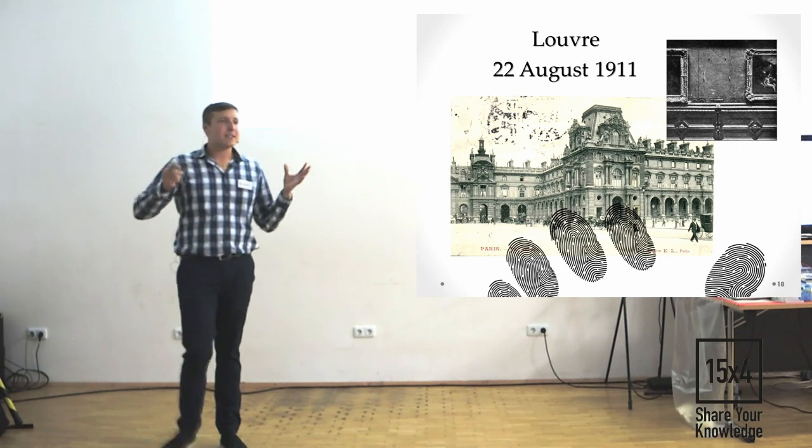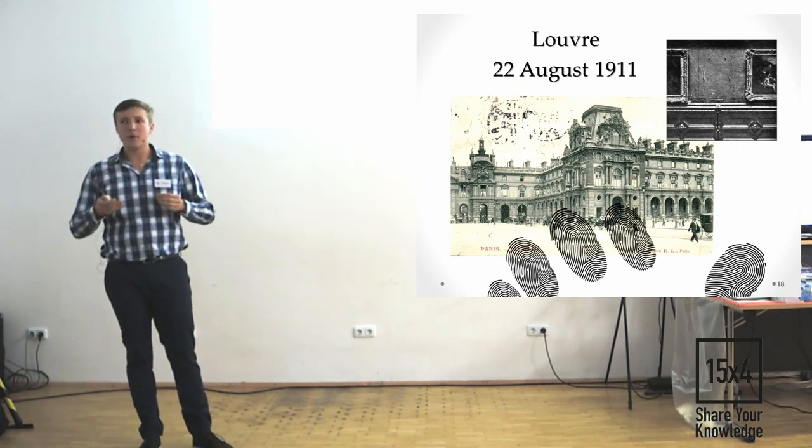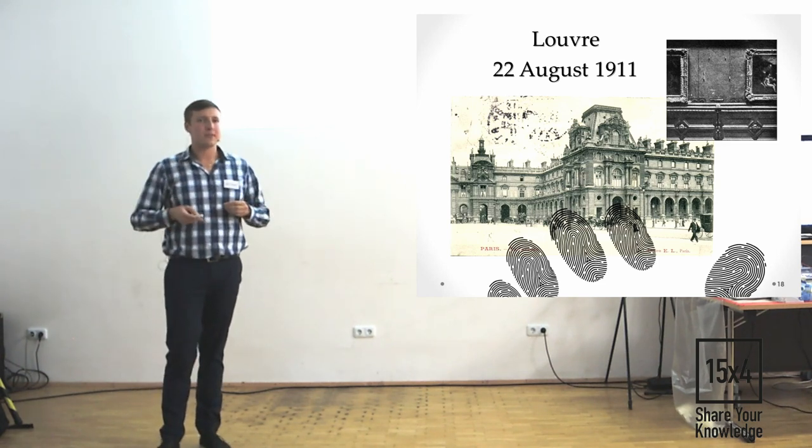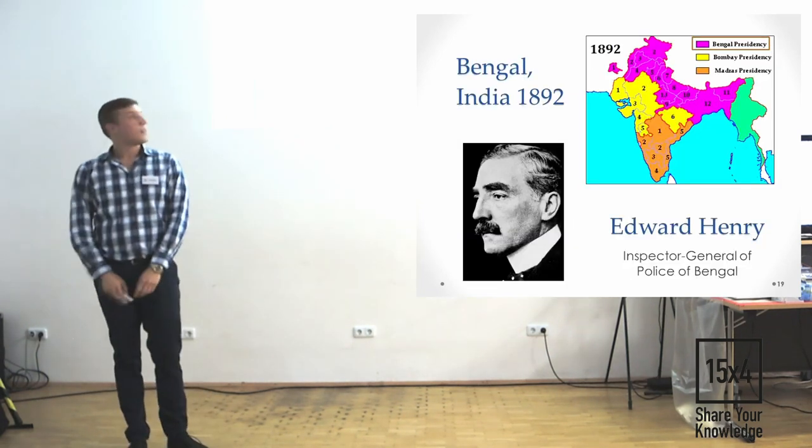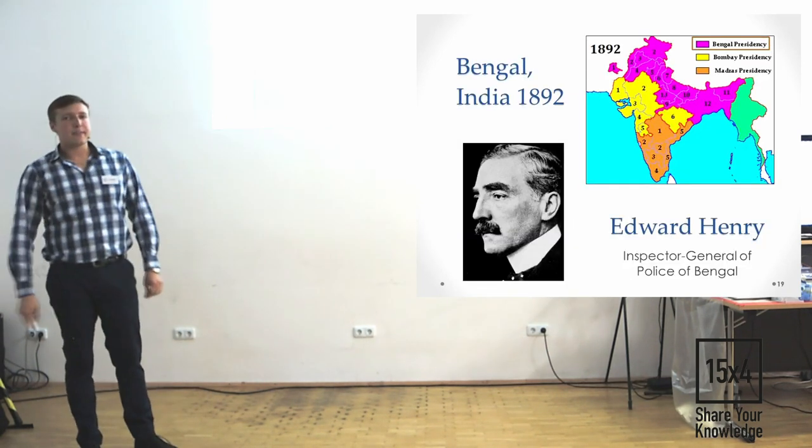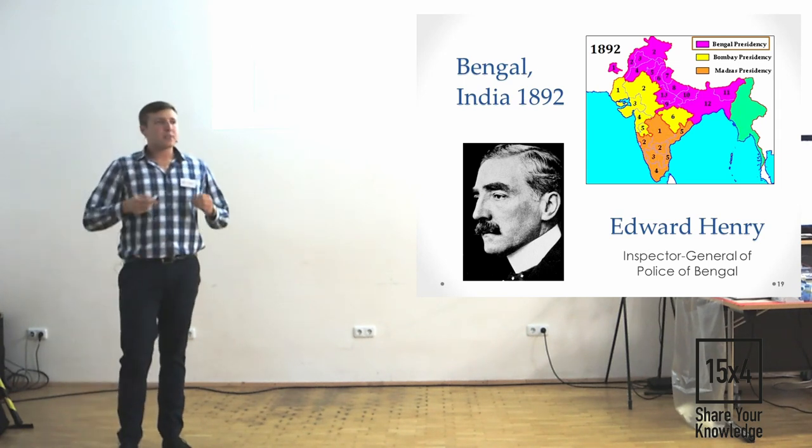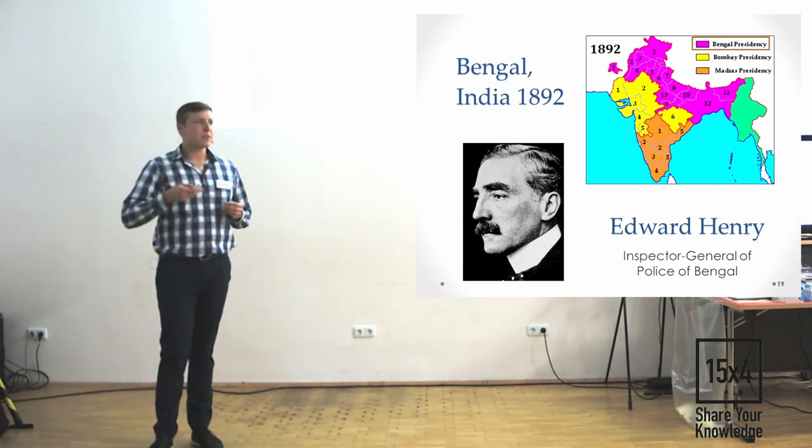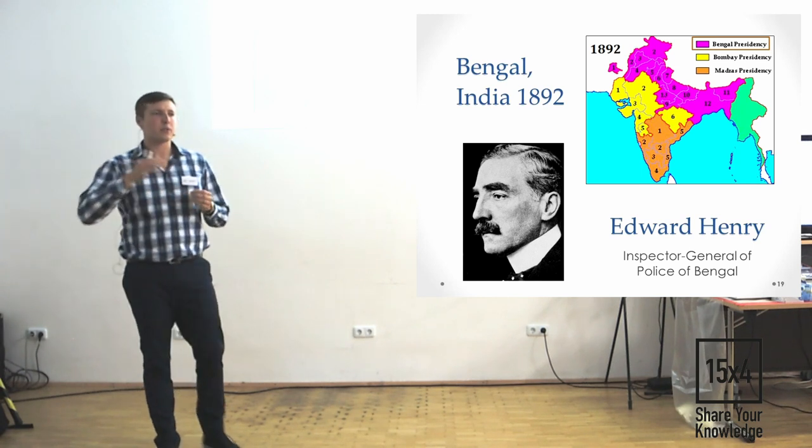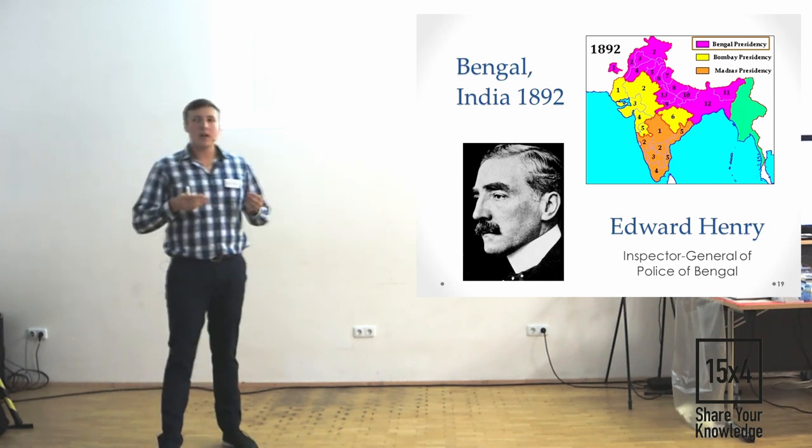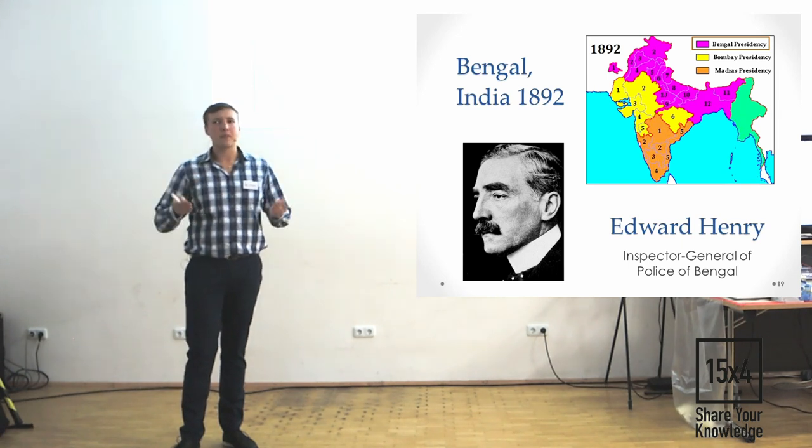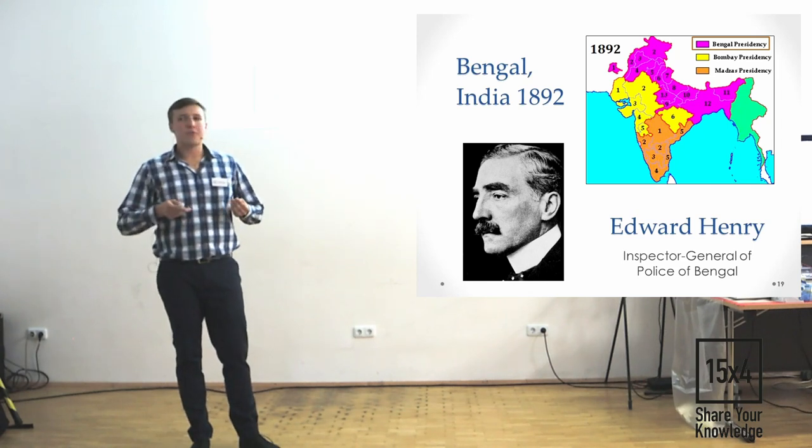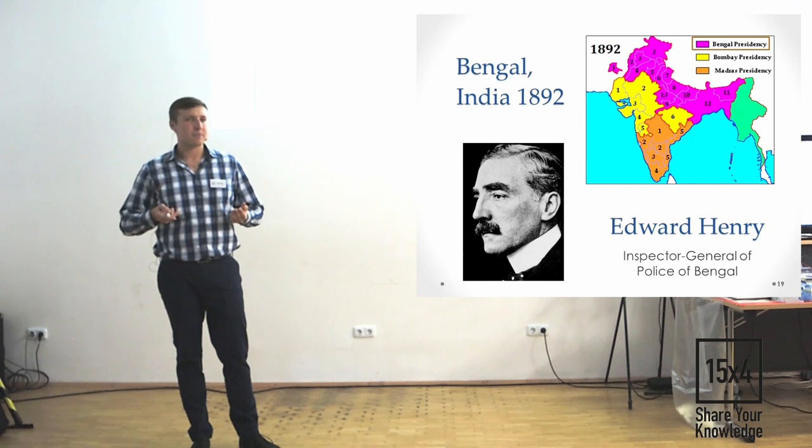It would be funny because in that time, the procedures of fingerprints systematization already existed and it worked in almost all around the world, except one country. You know, which one. Go back. Bengal, India. 1892. General inspector of police in Bengal, Edward Henry. He tried to teach Indian officers to make proper and accurate measurements for the Bertillon cards system. However, he failed. Lack of education among officers caused a lot of failures and a lot of mistakes, so it was useless. He tried to find a simpler way to identify criminals. And he found it.